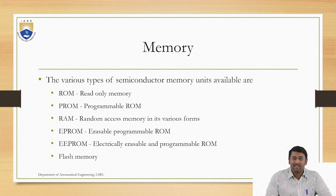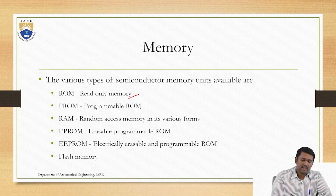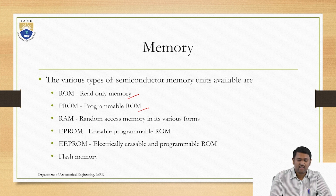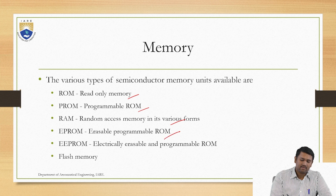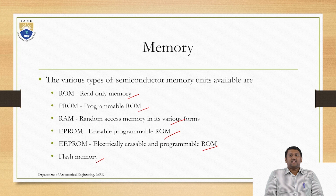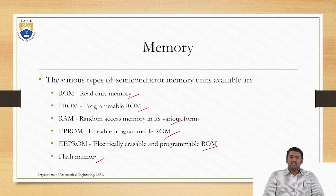What are the types of memories available? First is your read-only memory (ROM). Second is PROM, which stands for Programmable Read-Only Memory. Next is random access memory (RAM), erasable ROM, EPROM, as well as flash drive. These are your various semiconductor memory units available for use under CAD-CAM hardware.